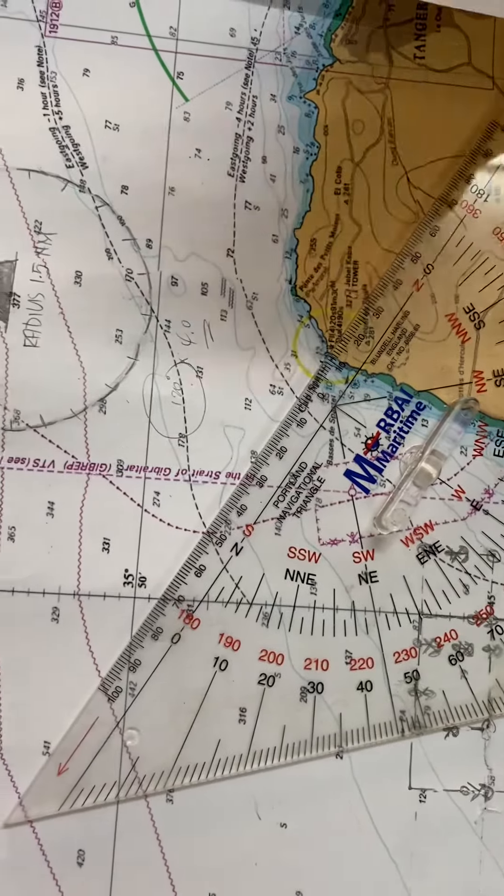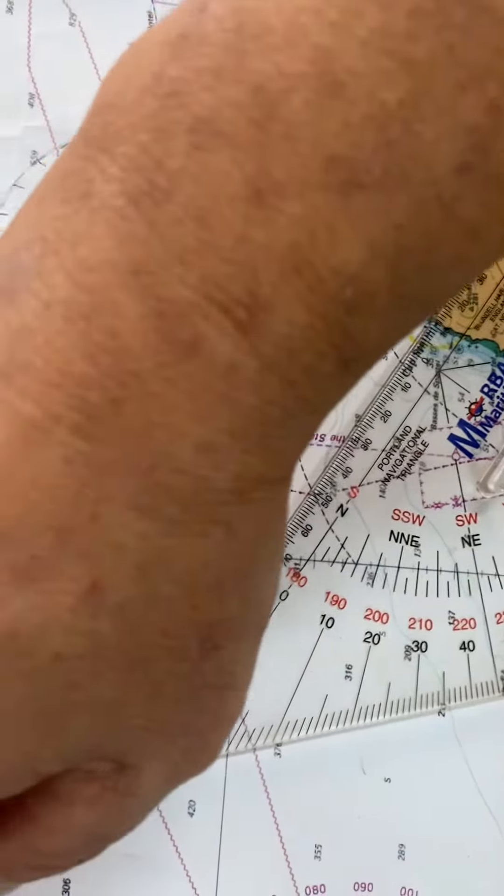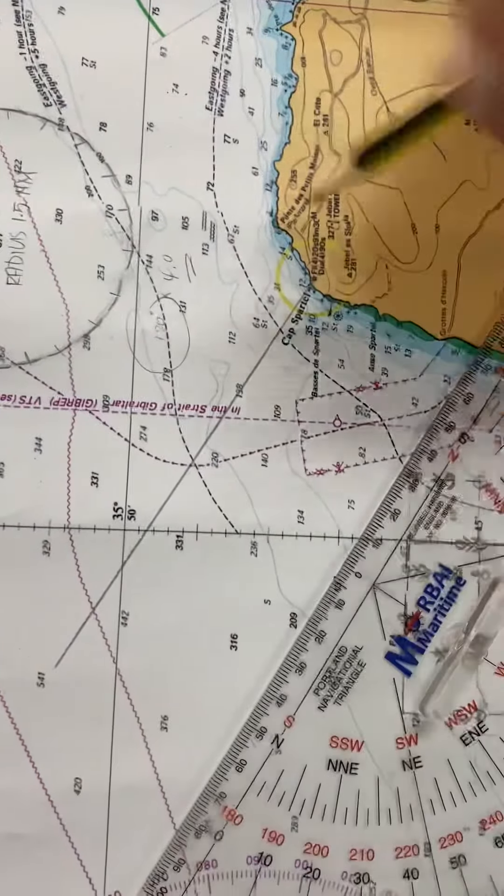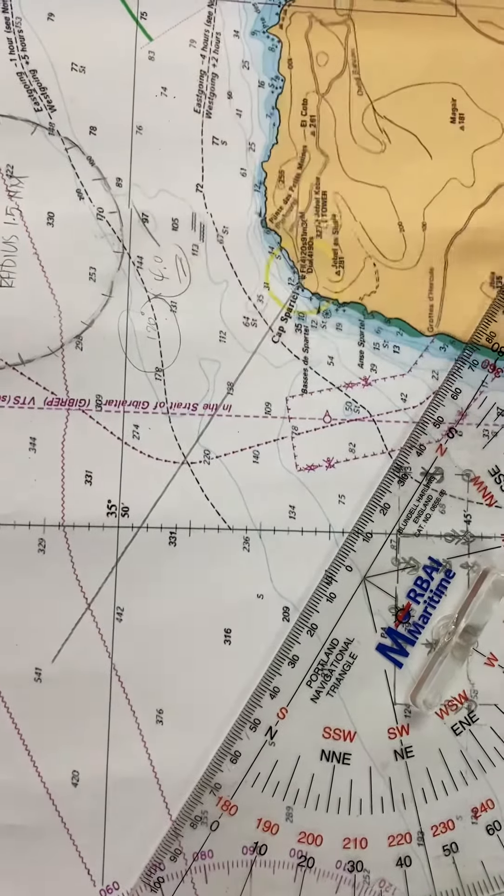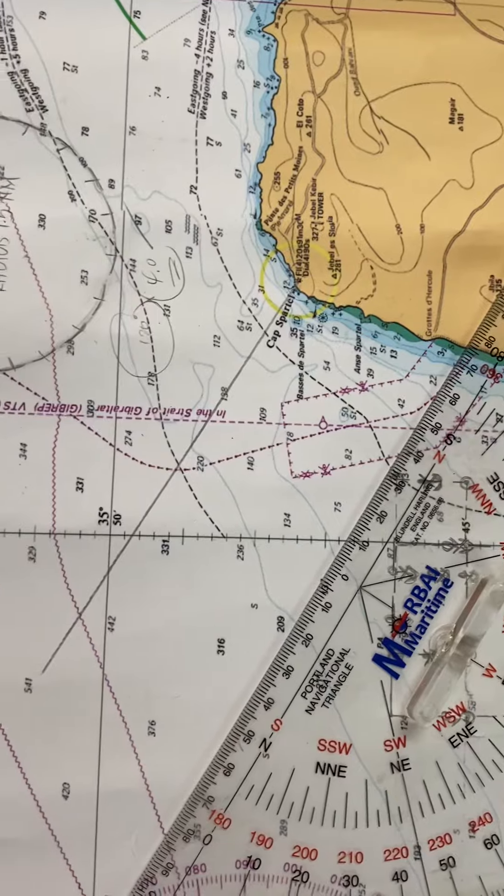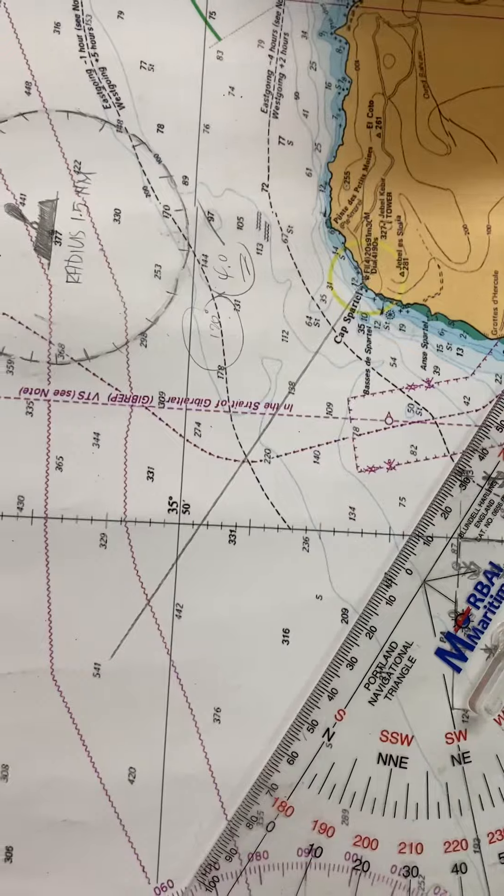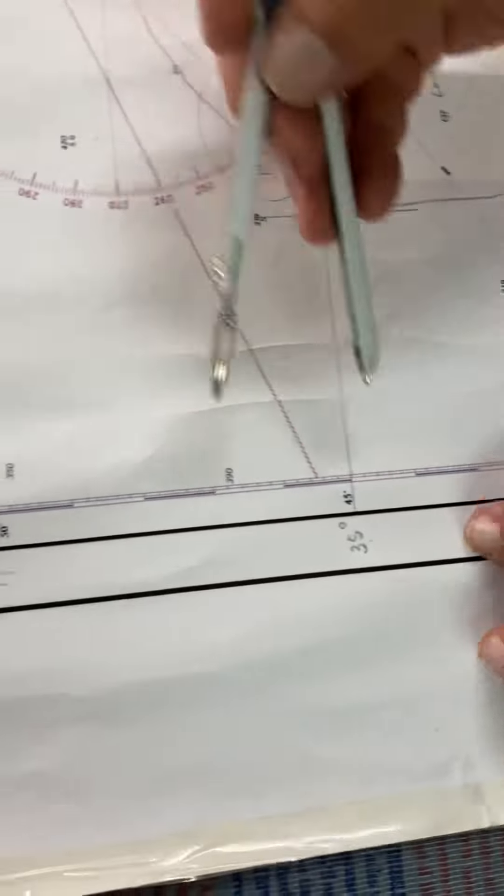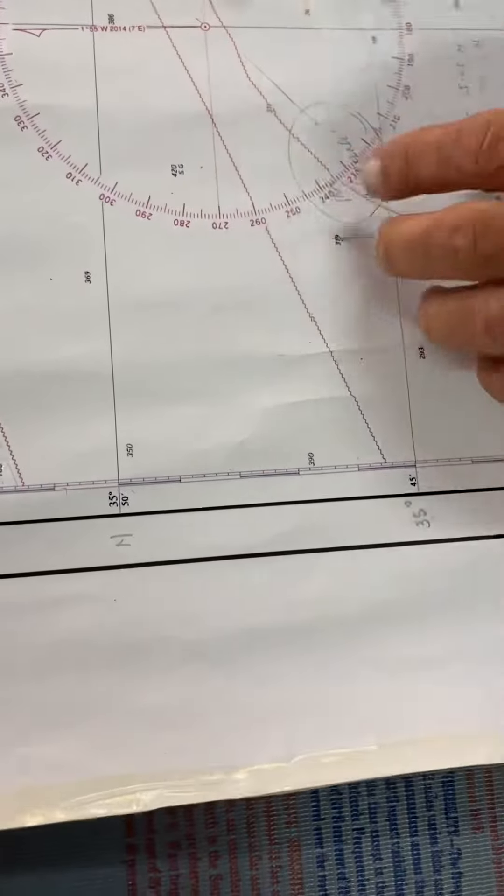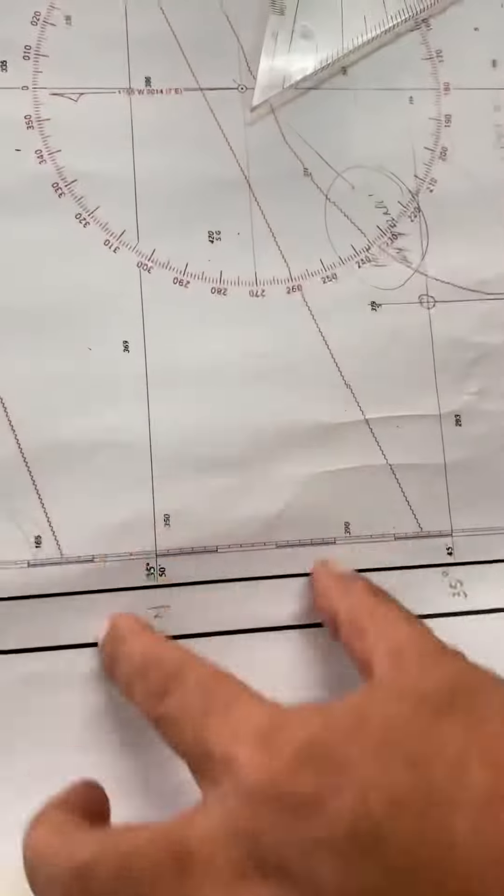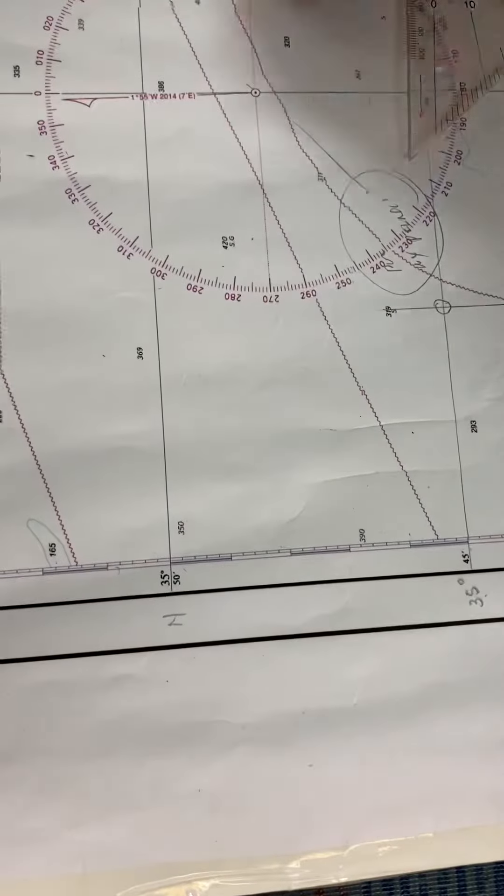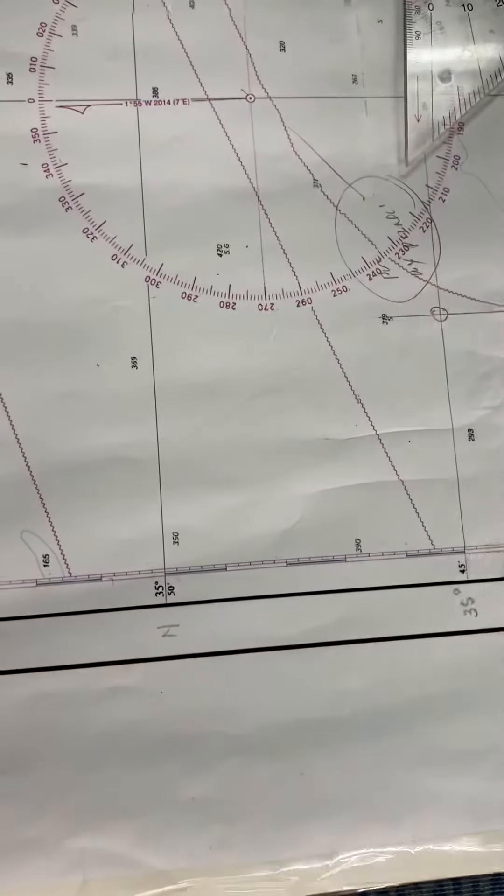The given distance is four nautical miles. By using the compass divider, we need to go to the latitude scale. You need to measure at the same latitude. To measure four nautical miles, start from this point where each increment is one nautical mile.